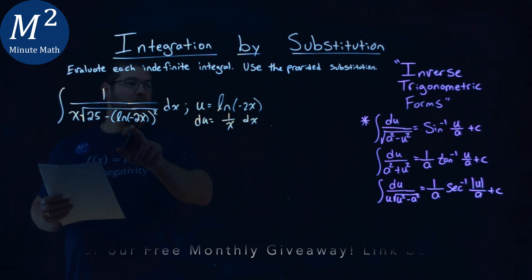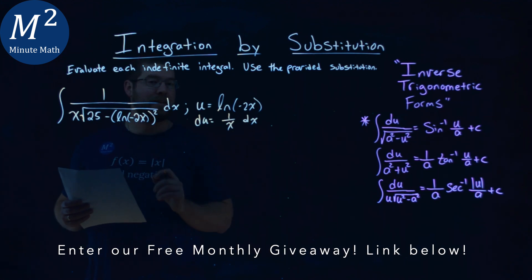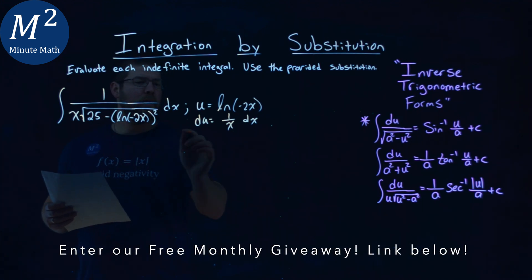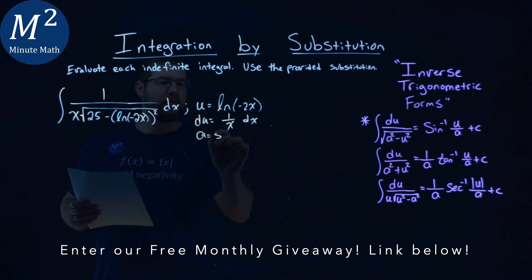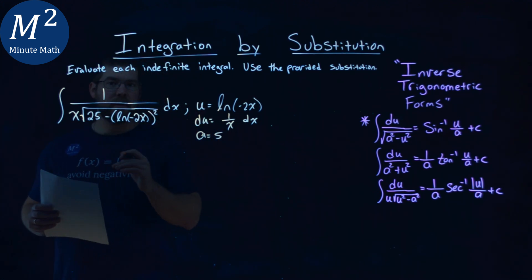We have a u value, right? u squared, clearly, is natural log of negative 2x squared. Got it. If we have an a value of 5, 5 squared is 25, and we're good. And see why I'm kind of tricked up here for a second.